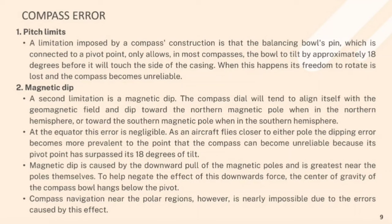Pitch limits: A limitation imposed by compass construction is that the balancing bowl's pin, which is connected to a pivot point, only allows in most compasses the bowl to tilt by approximately 18 degrees before it will touch the side of the casing. When this happens, its freedom to rotate is lost and the compass becomes unreliable.